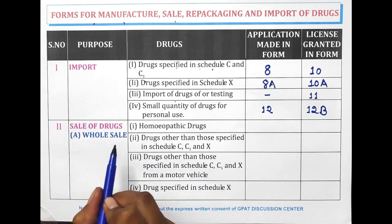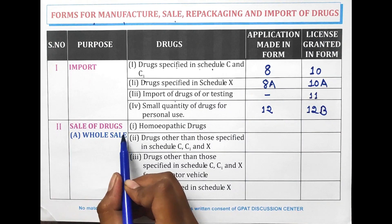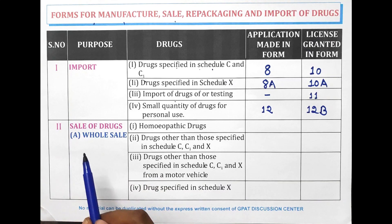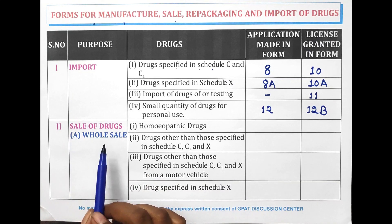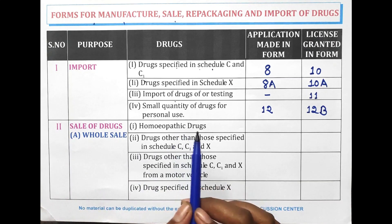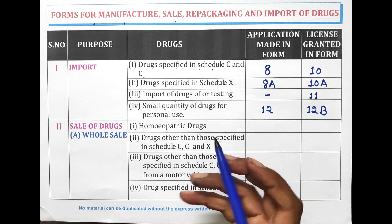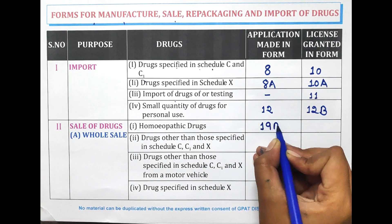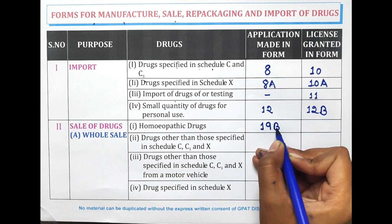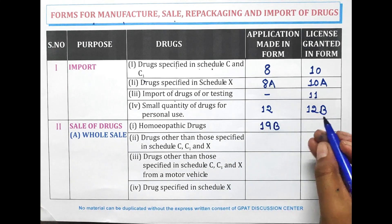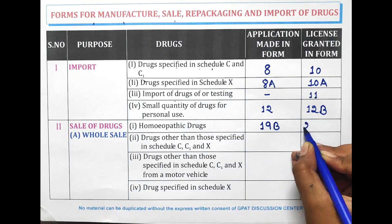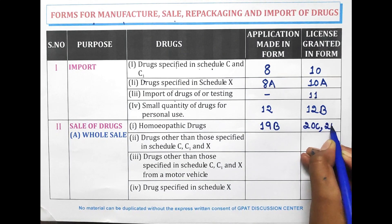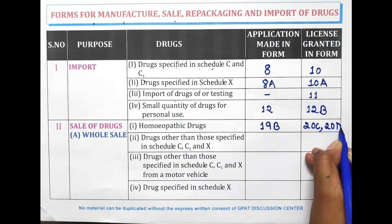For the sale of drugs, the first one is wholesale. For the wholesale of homeopathic drugs, Form 19B has to be filled and license is granted in Form 20C or Form 20D.